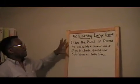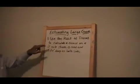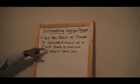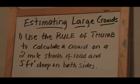Now, we're back. There's a problem right here. Use the rule of thumb to calculate a crowd on a two-mile stretch of road that ends five feet deep on both sides of the street.